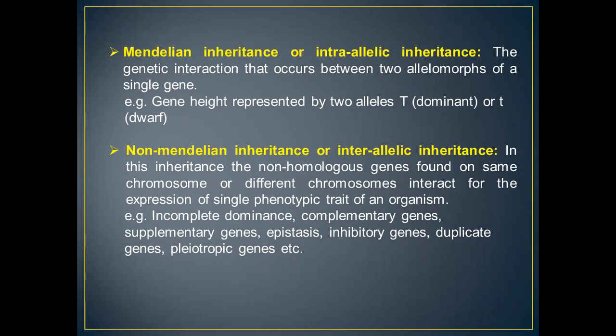For example, the gene for height is represented by two alleles — the dominant T (tall) or the dwarf, small t. These two alleles are on homologous chromosomes and control the phenotypic trait of height. In a monohybrid cross, the ratio would be 3:1, and for a dihybrid cross, the ratio would be 9:3:3:1.